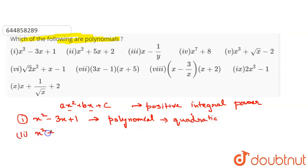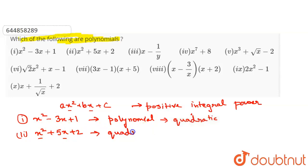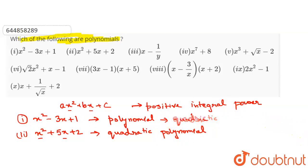The second question is x squared plus 5x plus 2. Here also, the powers of all the variables are positive and in whole numbers. Therefore it is also a quadratic polynomial because the highest power is 2 and all powers are positive integral.